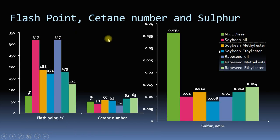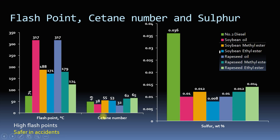Another property to consider is flash point, cetane number, and sulfur content. The flash point of diesel is low while that of biodiesel is high — this is actually an advantage, as a vehicle running on biodiesel is safer in an accident. The cetane number of biodiesel is higher than that of diesel, so for biodiesel blends this helps in better combustion. The sulfur content of oils and biodiesel is very low compared to diesel, so there will be lesser emissions.